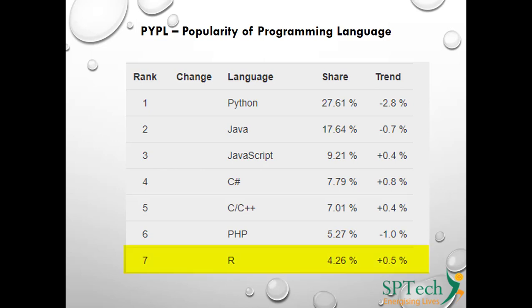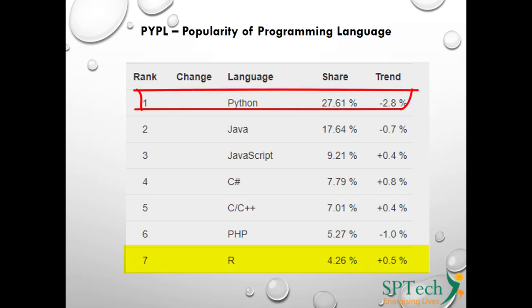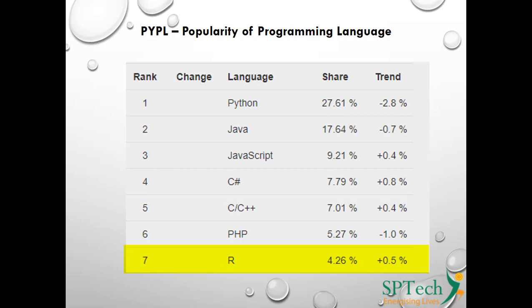Coming to the popularity of R among programming languages — this data is from the PYPL index, which stands for Popularity of Programming Language. As of 2022, Python has the highest popularity, and R is ranked at position number seven. This is also one of the reasons to learn R, as it remains quite popular today.